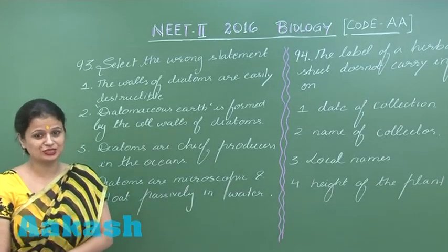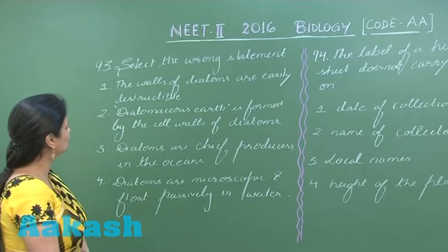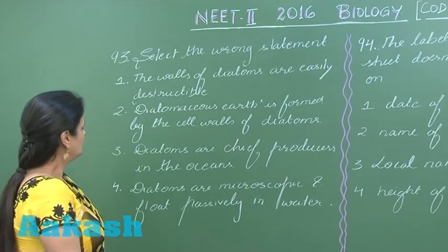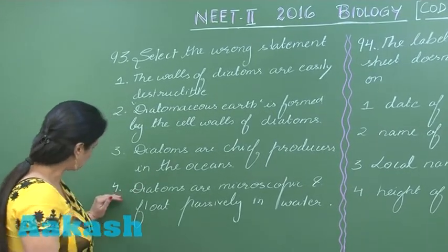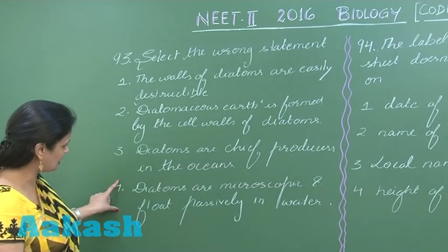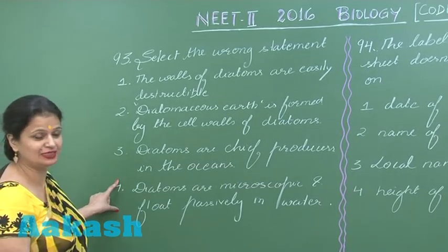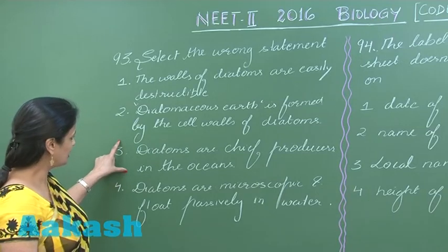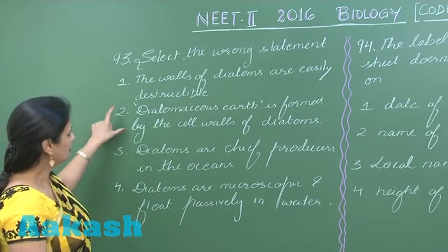Let's discuss question number 93. We have to look for the wrong option. Starting from option number 4: diatoms are microscopic and float passively in water — that's right. They are chief producers — this is also right.